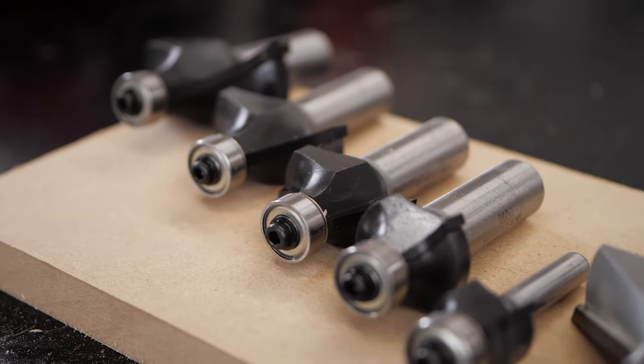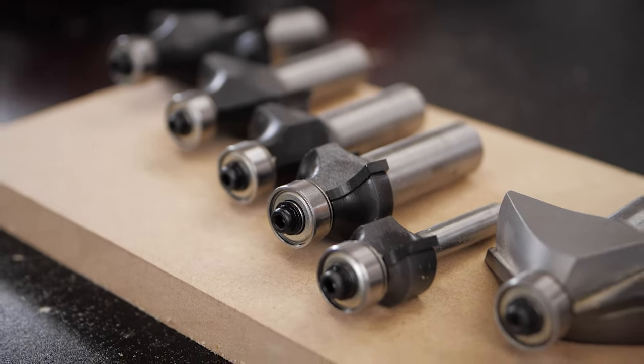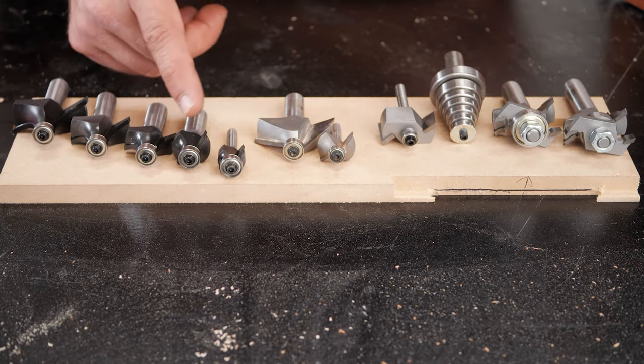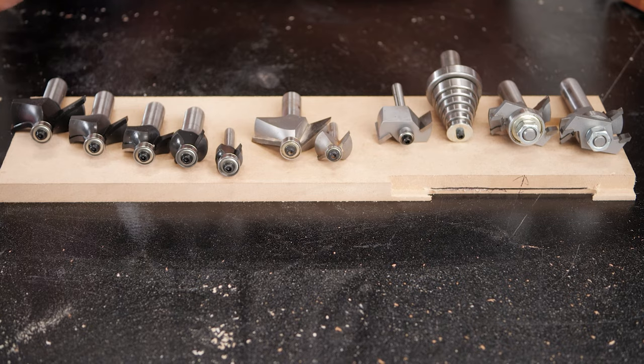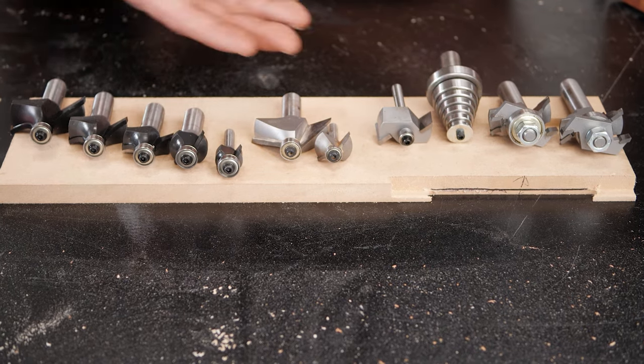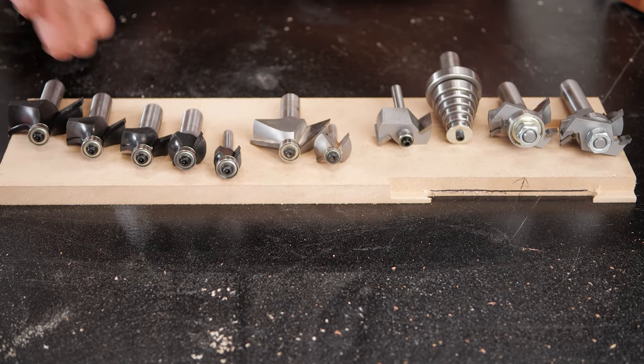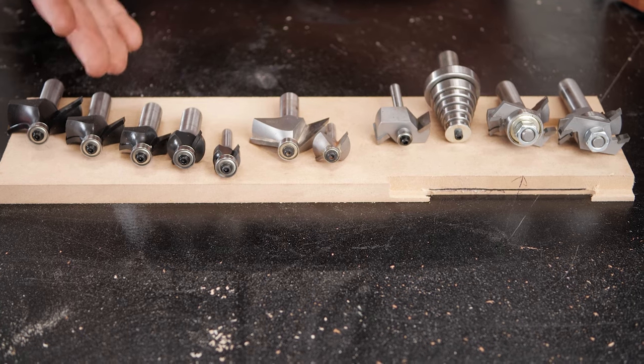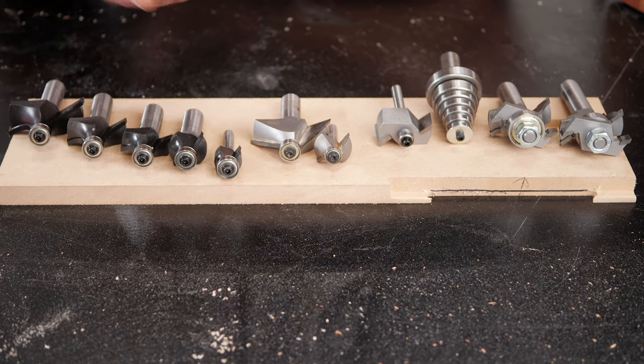These are a series of roundover bits going from, I believe, an inch, three quarters, half an inch, quarter inch, eighth inch. And these are great for a variety of applications, including you can make your own dowels in a router table by running the piece over it four times. And you can create a circle if you don't have a lathe.